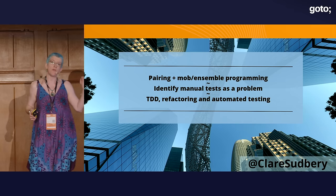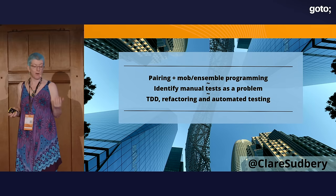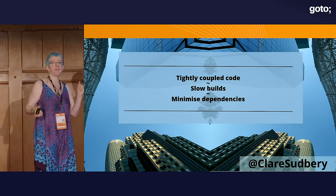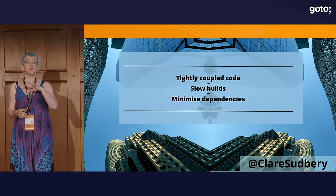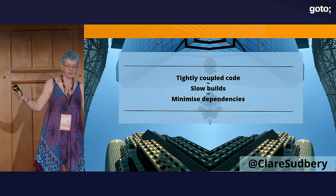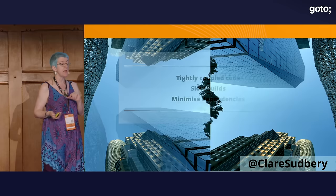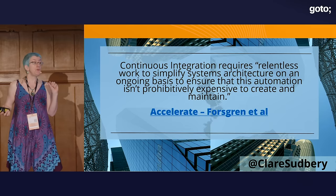They start using test-driven development, which means no line of code is written without there already being a test — tests are written first. Another effect is that they now have an automated test suite automatically. They also start refactoring on a regular basis. But their code is really tightly coupled, not well-factored or well-architected, which means builds are really slow — because every time one bit needs rebuilding, the whole code base needs rebuilding. So they start re-architecting to be loosely coupled, minimizing dependencies, which speeds up build time.